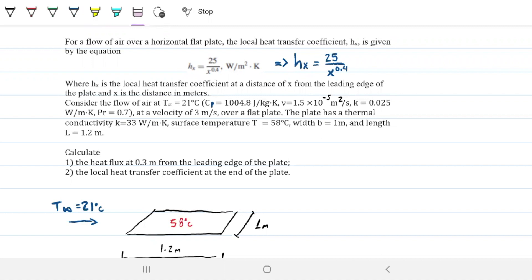Consider the flow of air at a temperature of 21°C with C_p of 1004.8, kinematic viscosity of 1.5, conductivity of 0.025, and Prandtl number of 0.7 at a velocity of 3 meters per second over a flat plate. The plate has a thermal conductivity of 33 watts per meter per Kelvin, surface temperature of 58°C, width of 1 meter and length of 1.2 meters.